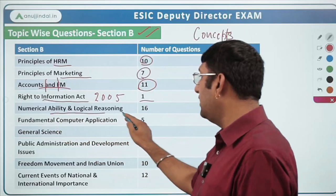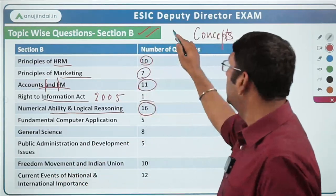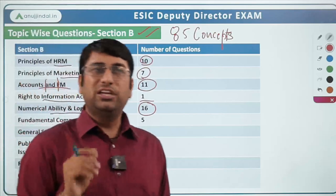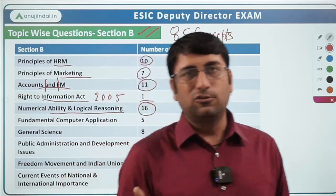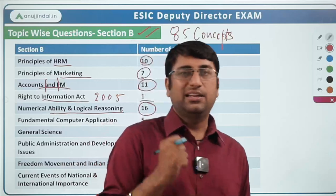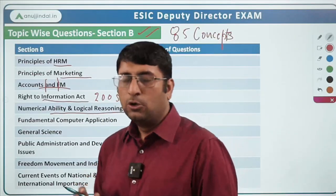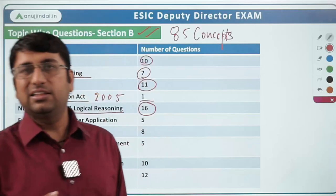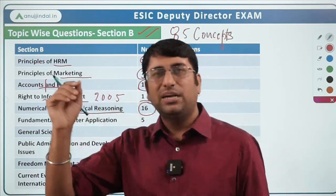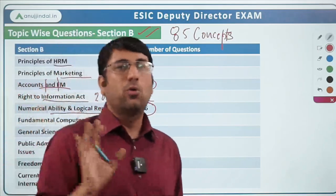The next topic is Numerical Ability and Logical Reasoning, which has the highest weightage — 16 questions out of 85 in Section B. Now let's address the elephant in the room: if you have been preparing for other competitive exams like RBI, SEBI, or NABARD, your Phase 1 is specifically focused on numerical ability and logical reasoning. Those 16 questions you can knock out very easily because the level here is lower than RBI/SEBI/NABARD — not above that level. If you're well prepared there, you need not worry for this section.